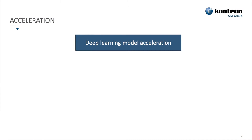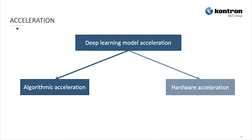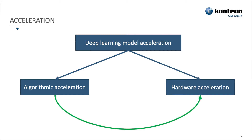Now I will talk about deep learning model accelerations in general. There are two types: first, algorithmic accelerations — done purely at the software or algorithmic level — and second, hardware accelerations. To get the best performance, you need to combine the two: both algorithmic and hardware accelerations.